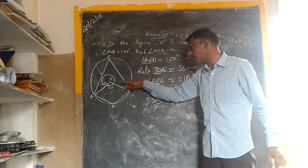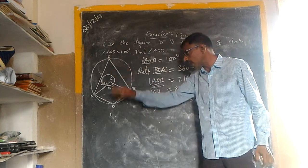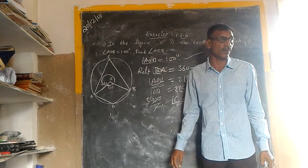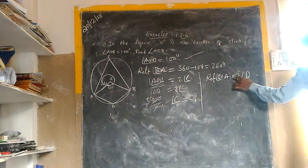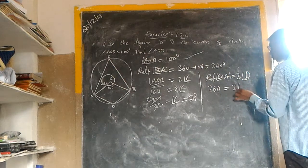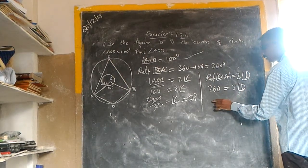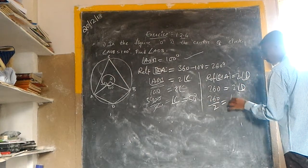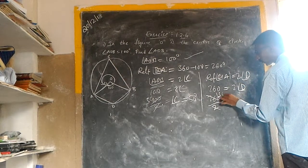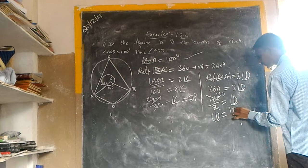Besides this, the reflex angle AOB is 260 degrees. Using the theorem — the reflex angle at the center equals 2 times angle D — we get 260 equals 2 times D. So angle D is equal to 130 degrees.